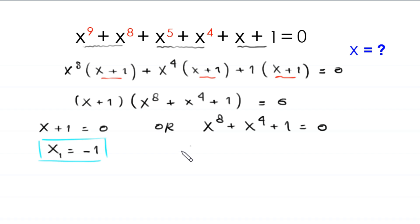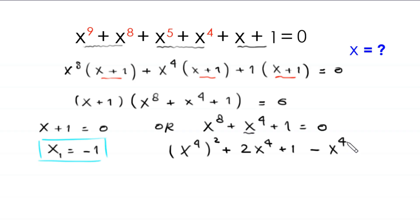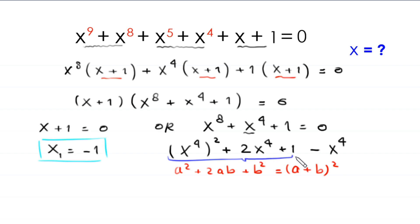We rewrite x to the power 8 as x to the power 4 whole squared, and we write x to the power 4 as 2x to the power 4 plus 1 minus x to the power 4. Using the algebraic identity a² plus 2ab plus b² equals (a plus b)², the expression x to the power 4 squared plus 2x to the power 4 plus 1 becomes x to the power 4 plus 1 whole squared, minus x squared whole squared.